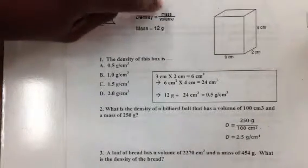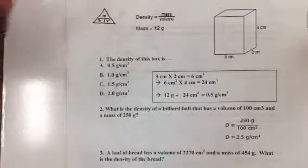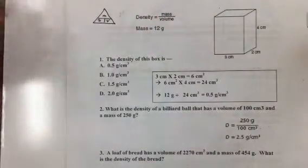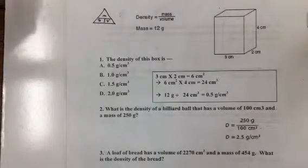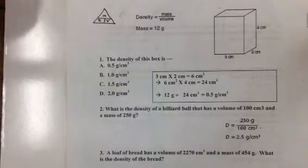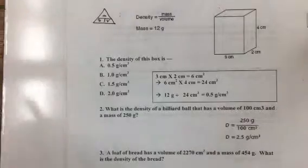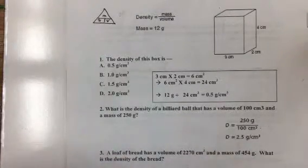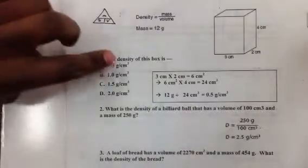Density is going to be equal to mass divided by volume. And just like we did before, you can put the variables in a triangle to figure out which formula to use depending on whether you're looking for either the density, the mass, or the volume. So given two of these, you should be able to figure out what the third one is.